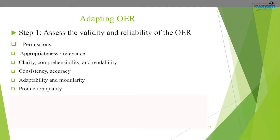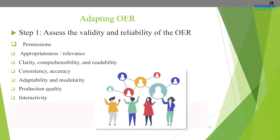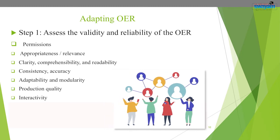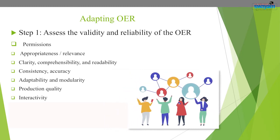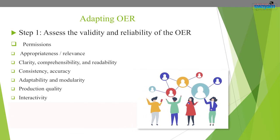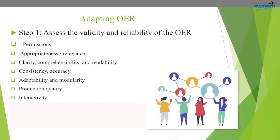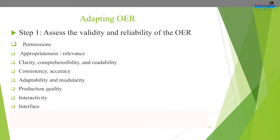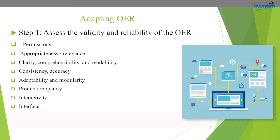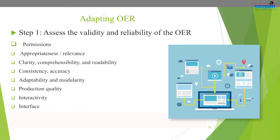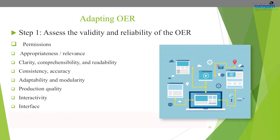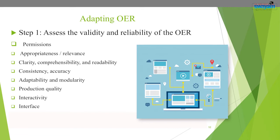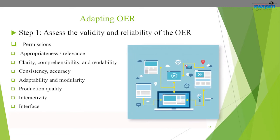The next parameter is interactivity — does the resource encourage active learning or class participation? Are there opportunities for students to test their understanding, for example a video with embedded questions? We also need to pay attention to interface — the text should be free of significant interface issues including navigation problems, distortion of images, charts, or other display features that may distract or confuse the reader.